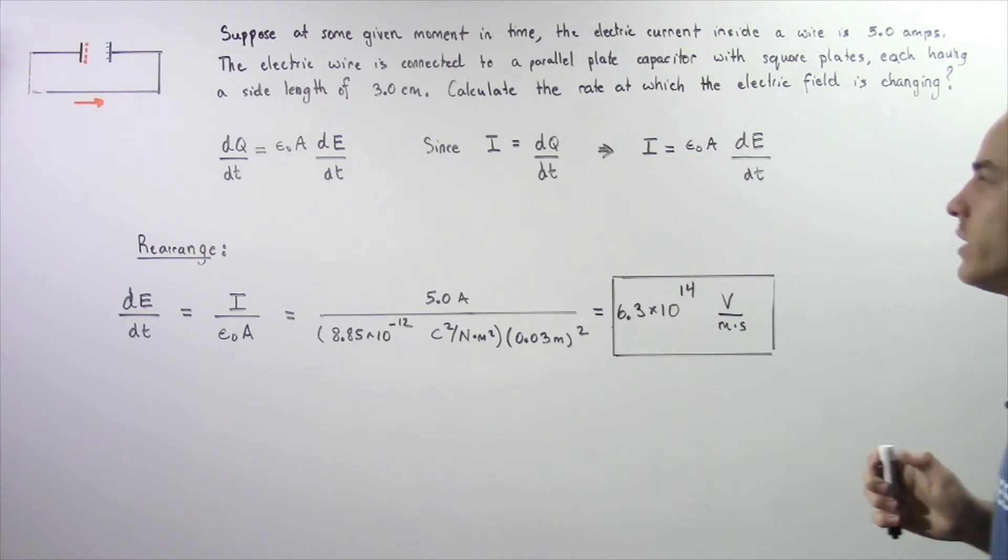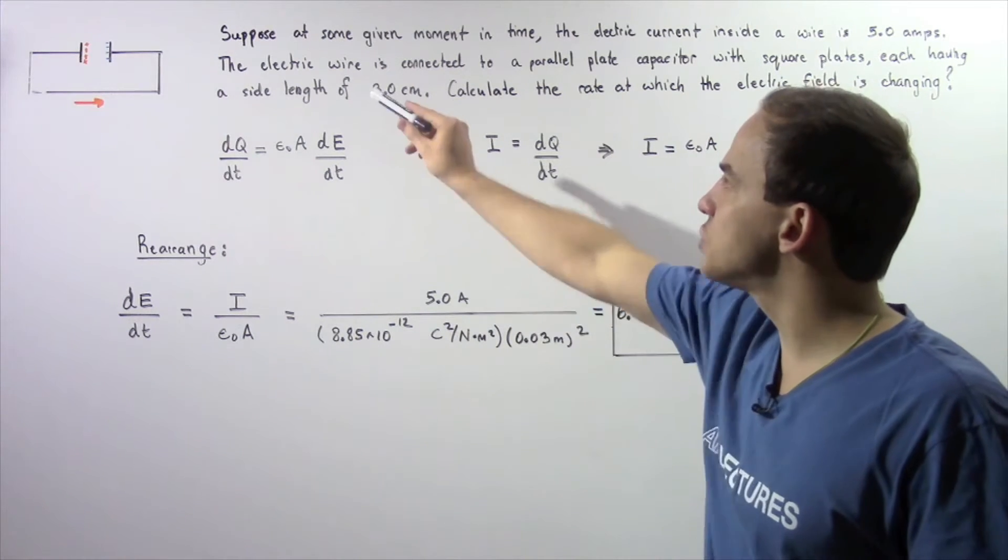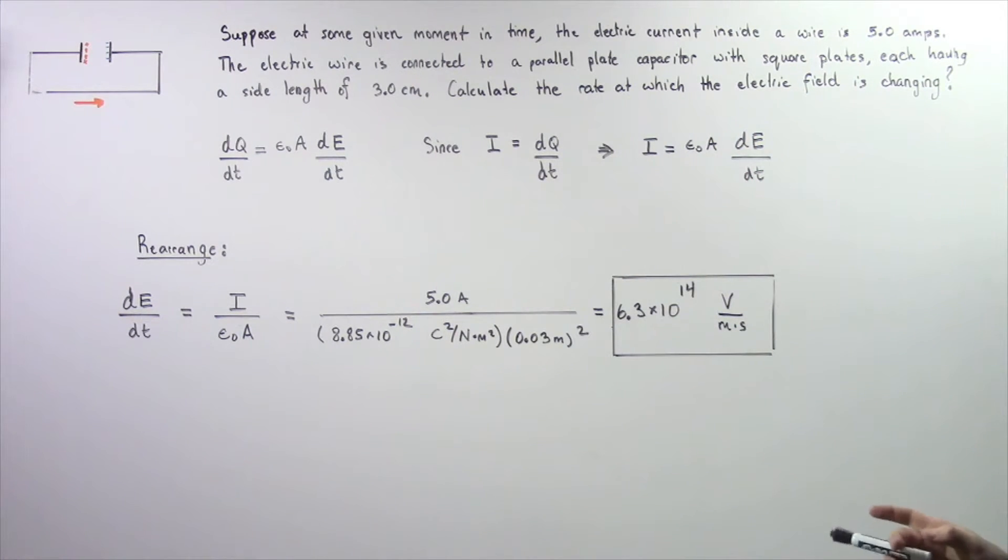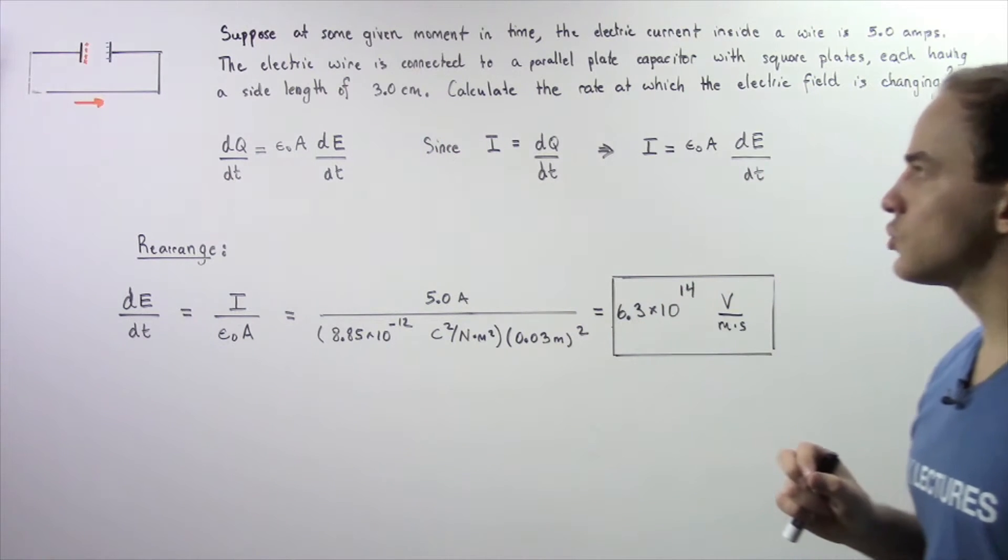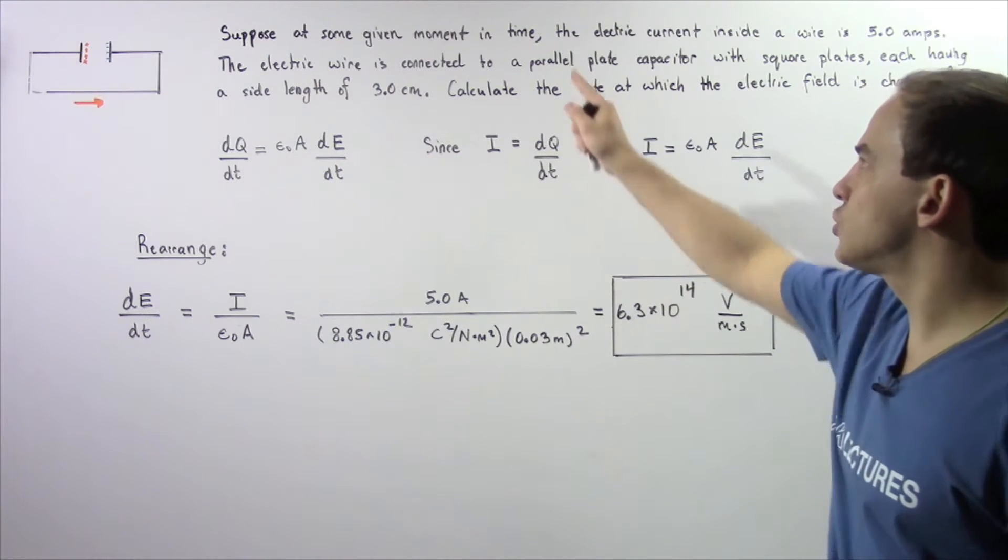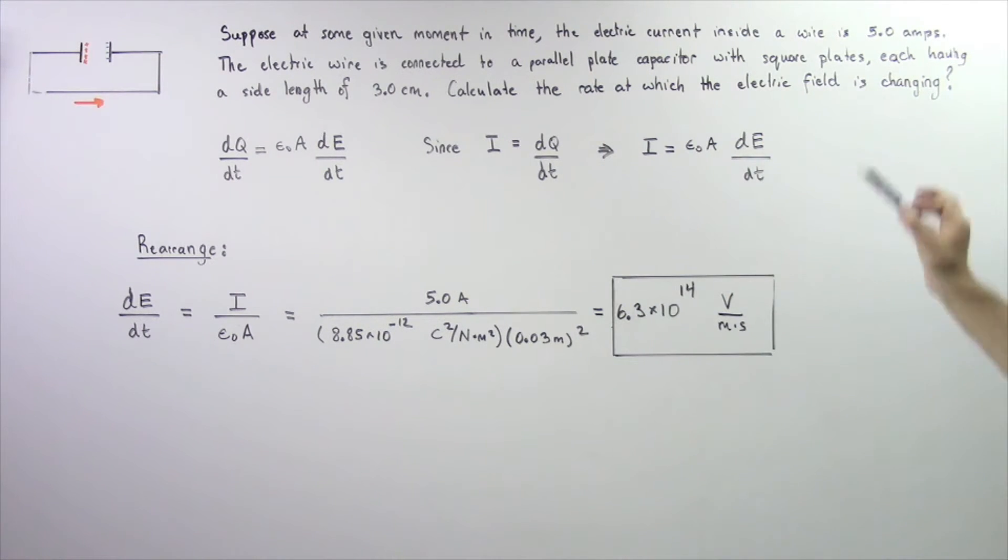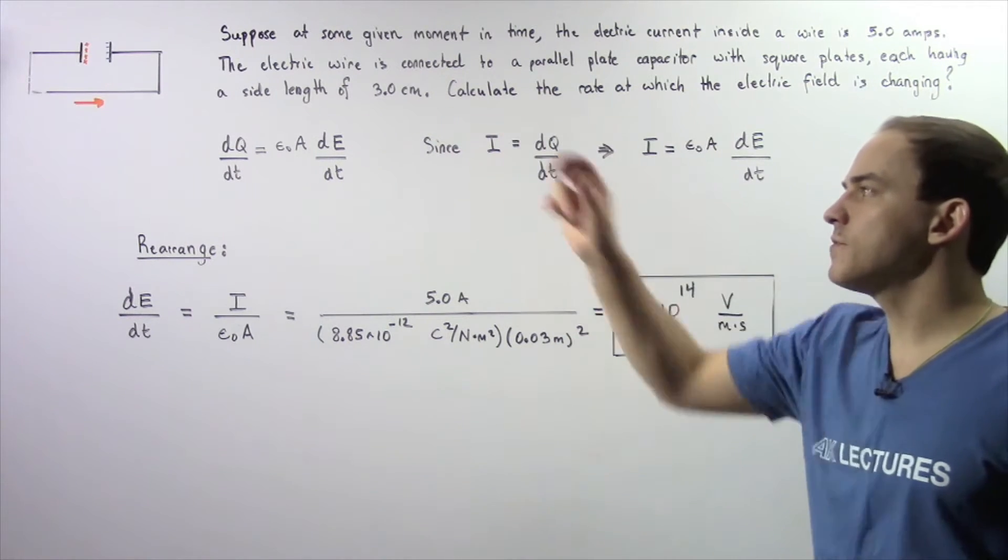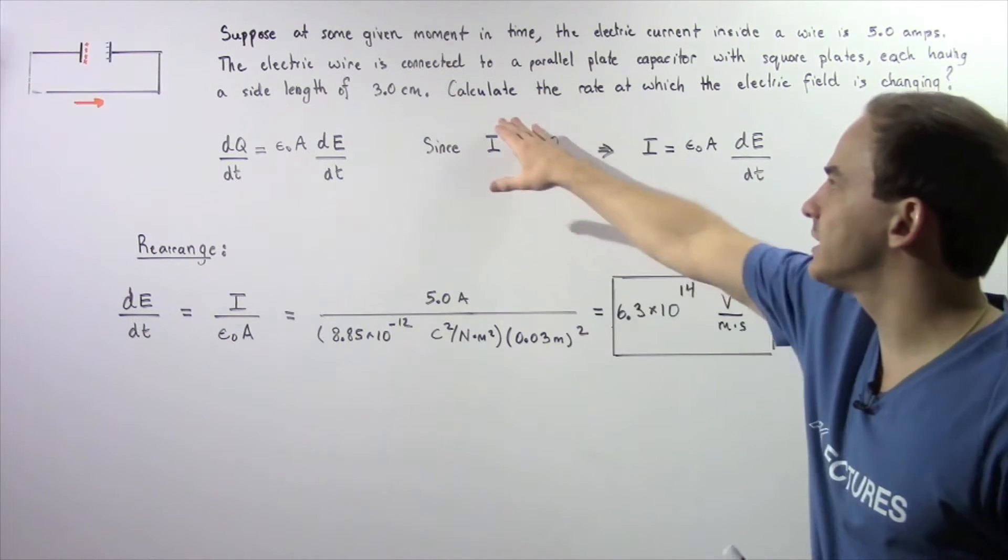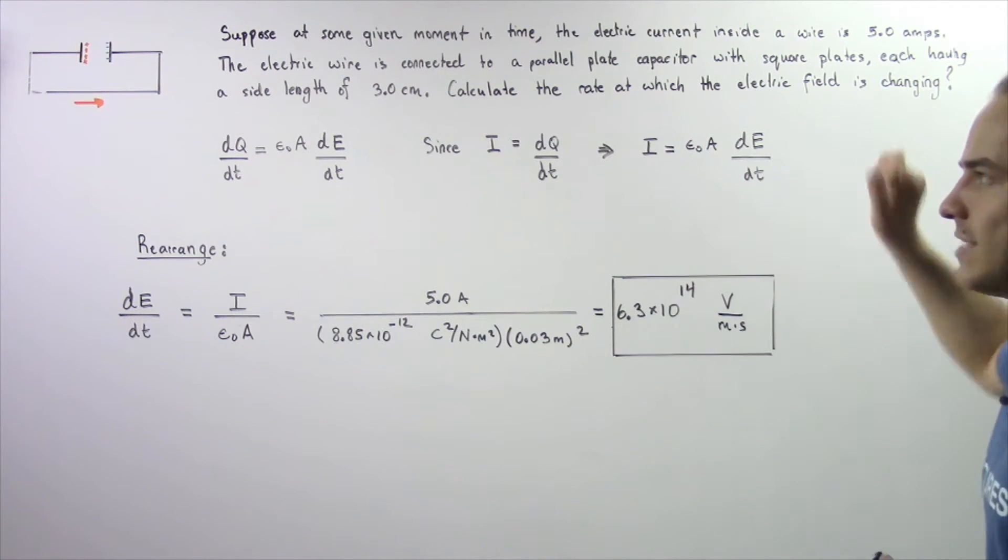Now let's look at the following application of this equation. Suppose that at some given moment in time the electric current inside a wire is 5 Amps. This electric wire is connected to a parallel plate capacitor with square plates each having a side length of 3 cm. We want to calculate the rate at which the electric field is changing.